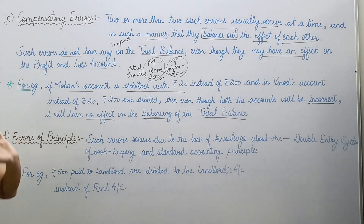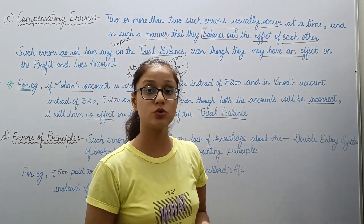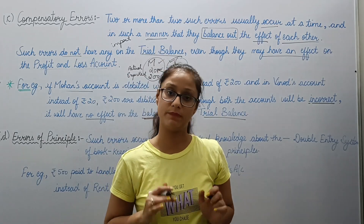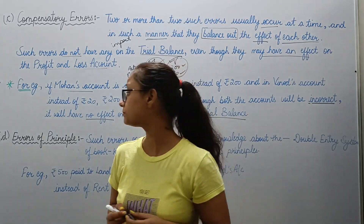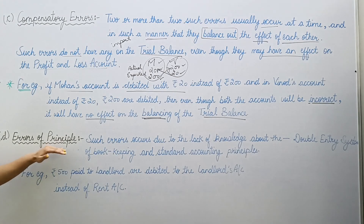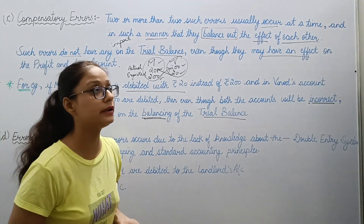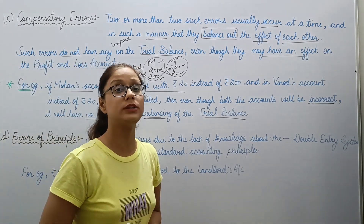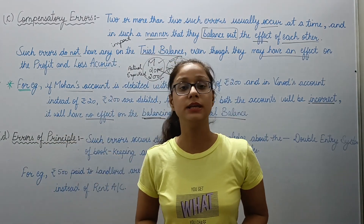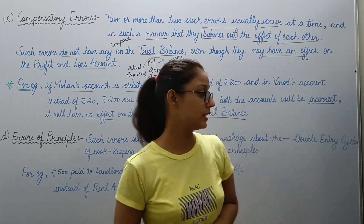This type of error is called compensatory errors — meaning two or more errors whose effects compensate each other. Next one is error of principle. Error of principle — what does it say? Such errors occur due to the lack of knowledge, meaning you didn't have knowledge of accounting principles, that's why the error is being generated.